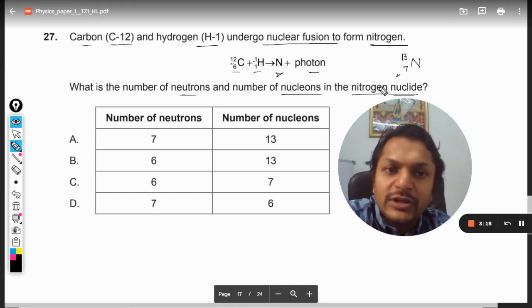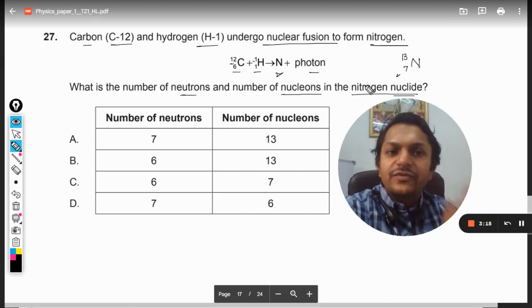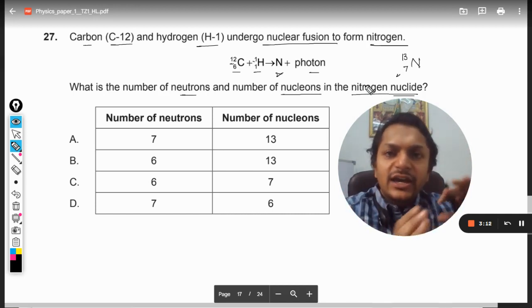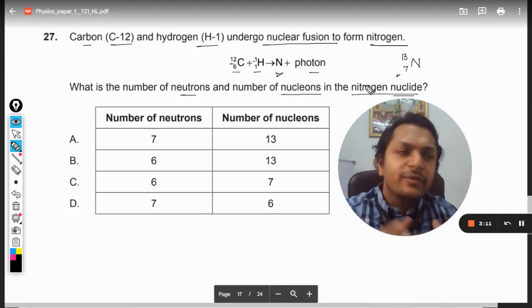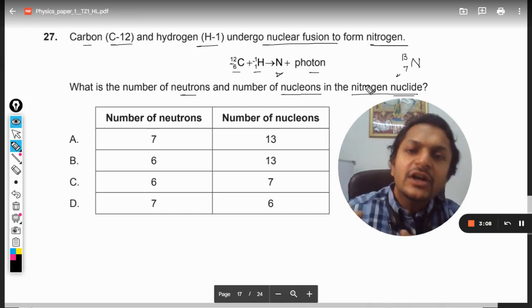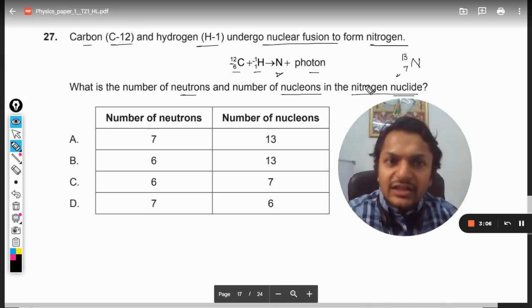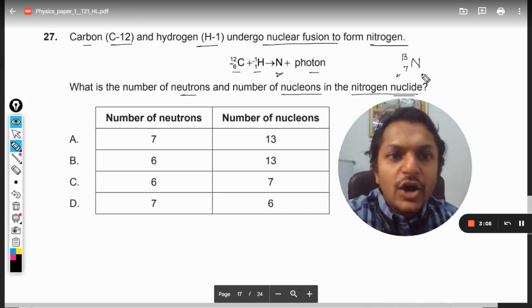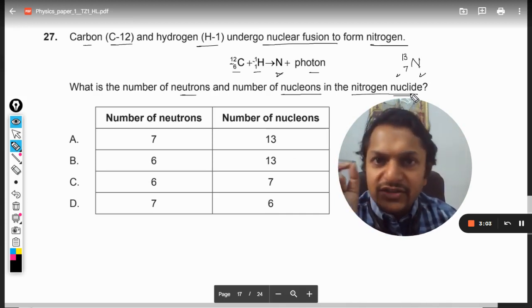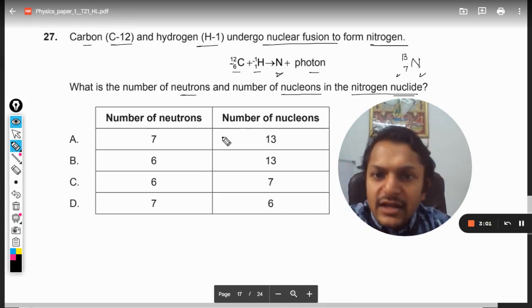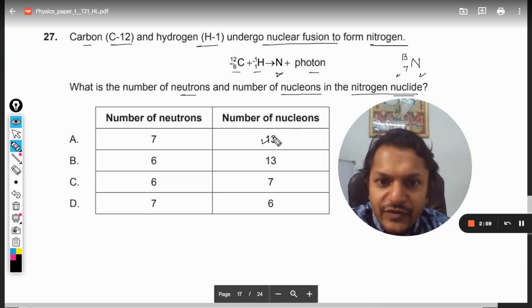And nothing is wasted here. No nuclei is moving in terms of beta particle or in terms of alpha particle or something. Nothing of that kind is happening here. Only nitrogen is there, so we can say that number of nucleons will be 13. We are sure about this thing.